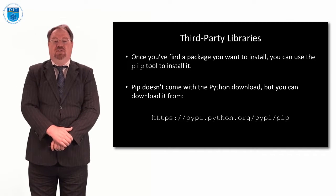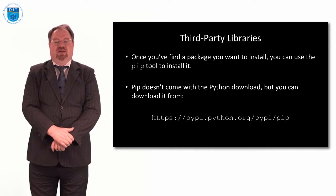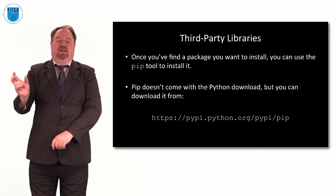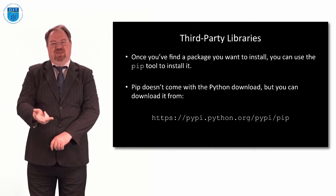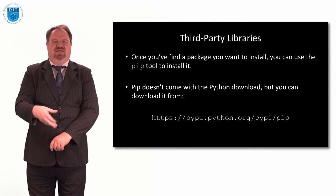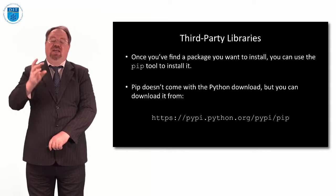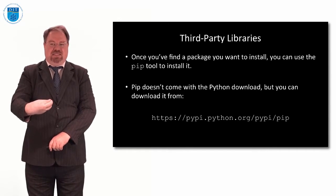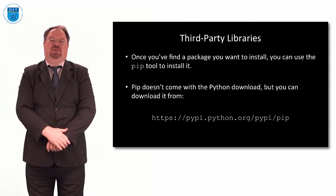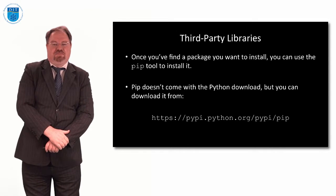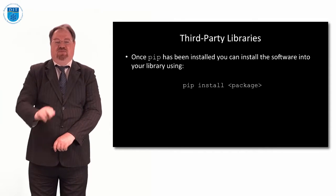Once you find the package you want to install, there's a tool called pip — P-I-P — the Python installation tool. Pip typically doesn't come with Python when you download it, but you can get it from pypi.python.org. Pip is the installation tool that allows you to install packages, the same way you might install a new DLL, font, or device driver in Windows. If you want to add a new Python library into your existing Python installation, pip takes the library you want and fits it into the Python standard library on your computer. Simply use the command at the Python prompt: pip install, followed by the name of the package, and that'll do it for you.